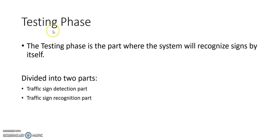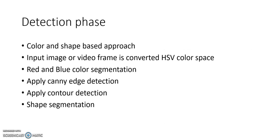After the training phase, we now come to the testing phase. The testing phase is where the system will recognize the traffic signs. It is divided into two parts: the detection part and the recognition part. The traffic sign has to be detected first in order to recognize the sign in the image. For the detection phase, we chose a color and shape based approach, which is the most effective method for traffic sign detection.